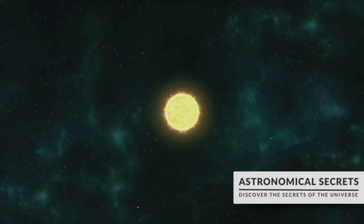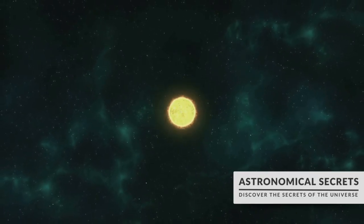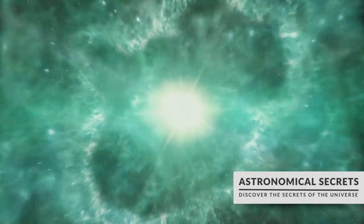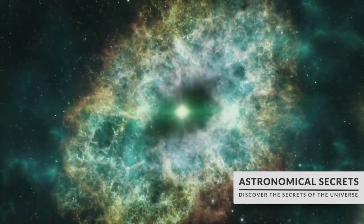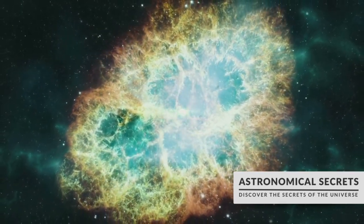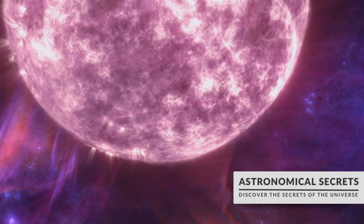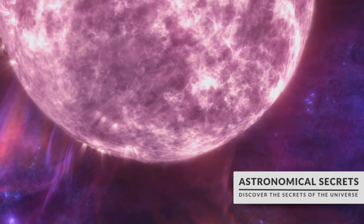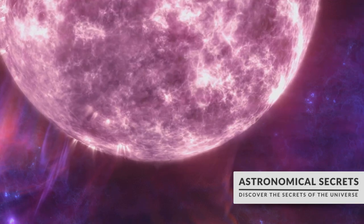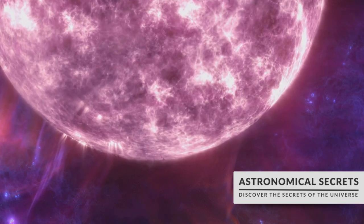White dwarf stars are stellar remnants, the remnants of stars that were once similar to our sun. These stars have exhausted their nuclear fuel, and after shedding their outer layers, they leave behind a hot, dense core. This core is what we call a white dwarf. It's a bit like the smoldering embers left after a fire is burned out.